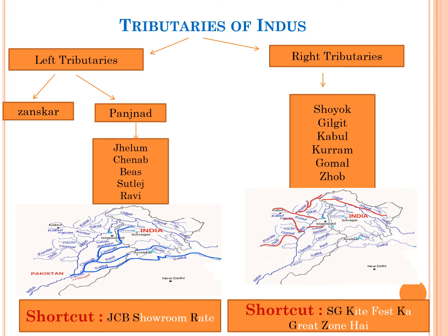The tributaries of the Indus river are classified into left tributaries and right tributaries. Janskar is one of the important left bank tributaries of the Indus. Panjana is the joint river current of all the five rivers of Punjab — that is Jhelam, Chinab, Bees, Sutlas and Ravi. The shortcut to remember these left tributaries of the Indus river is 'JCB showroom rate', where the highlighted letters are the first letters of the river names.